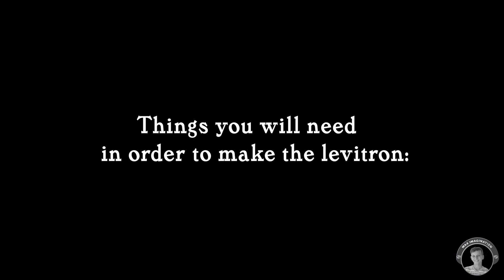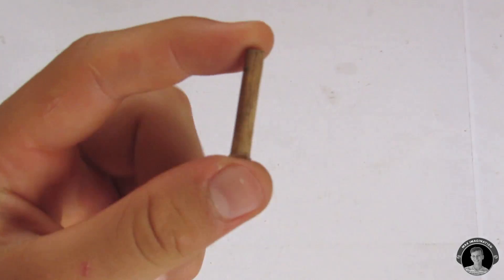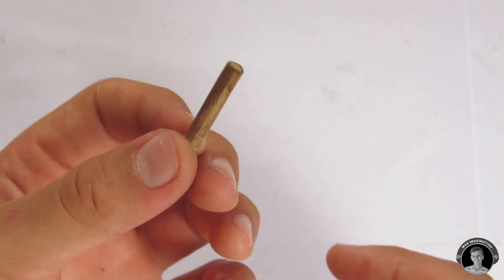Alright, let's cut the talk and get started. So this is everything you're going to need in order to make the levitating spinning top. First, you're going to take a 3 centimeter cut pencil or bamboo stick.